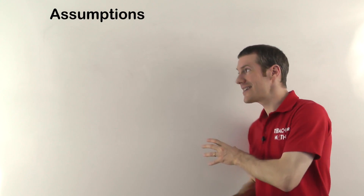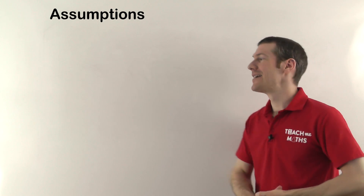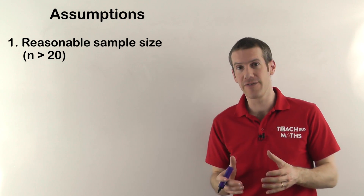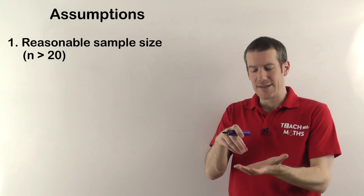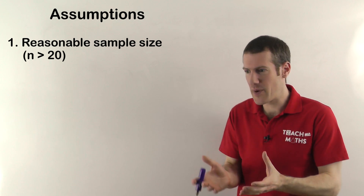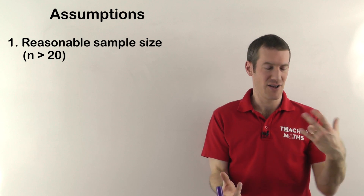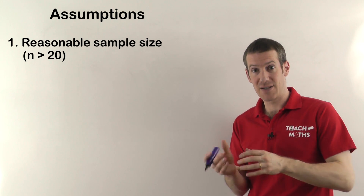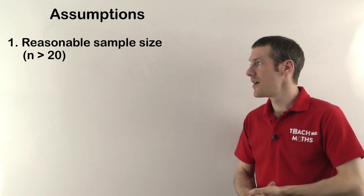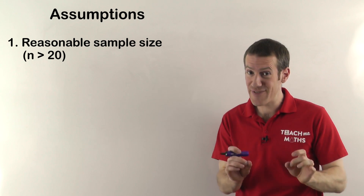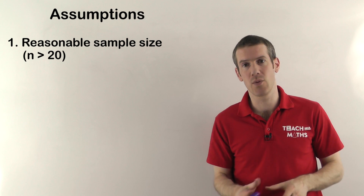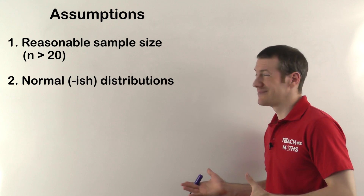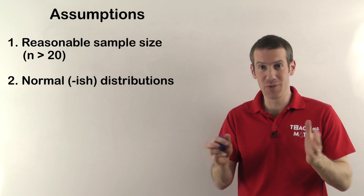Finally, there are some assumptions you should be aware of with the t-test. If you break these, things can go horribly wrong and your data can be pretty much meaningless. The first one is you need a reasonable sample size. If you haven't got enough data points in your sample, it's not going to work. For example, if you only tested three patients with your drug and three in the control group, you're not going to get any meaningful conclusions. Typically you want at least 20 data points in each sample — ideally at least 30 — and if the sample size is too small, the t-test just won't reliably tell you whether or not there is a difference.